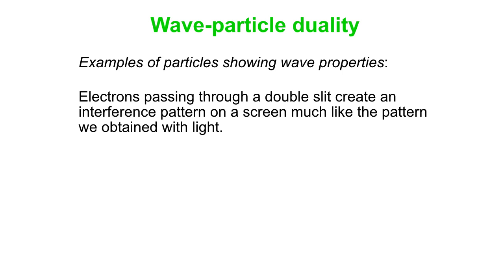And what this means is - you can do it like one electron at a time and make this pattern. So in some sense, the electron kind of goes through both slits at once and interferes with itself and makes this pattern. It's kind of weird.